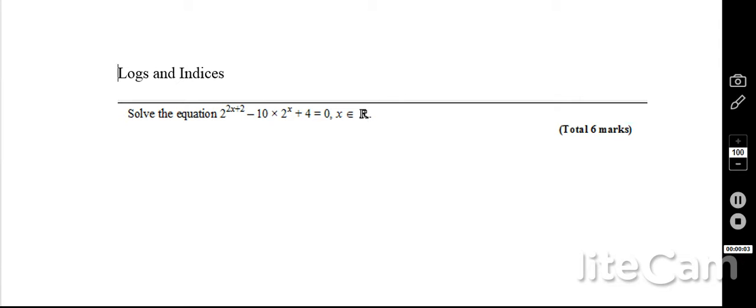Ok, so here we go, a question on logs and indices. We've got to solve the equation 2 to the power 2x plus 2, take away 10 times 2 to the power x plus 4 equals 0.